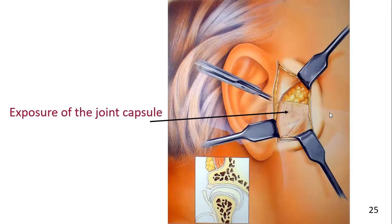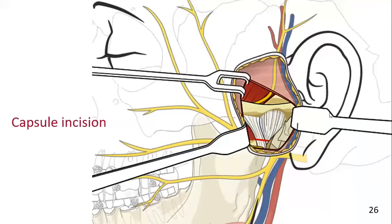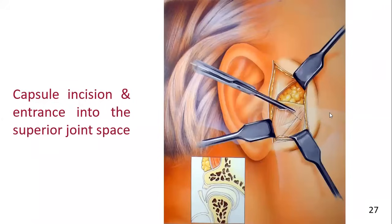The entire TMJ capsule can then be revealed. To help determine the location of the articular space, the mandible can be manipulated open and closed. In cases of treating condylar head fracture, the TMJ capsule is horizontally incised at the level where the capsule meets the condylar neck. After retraction of tissue superficial to the temporomandibular joint capsule, scissors are used to enter the capsule. The initial point of entry is just below the zygomatic arch, continuing parallel to the contour of the TMJ fossa.